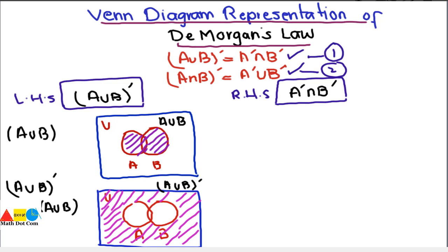Now let's take the right-hand side, which is A complement intersection B complement. Here we will have three parts: first we find A complement, then B complement, and then their intersection.